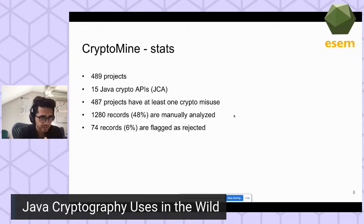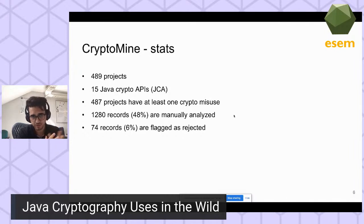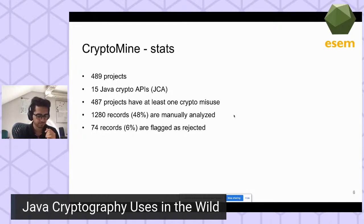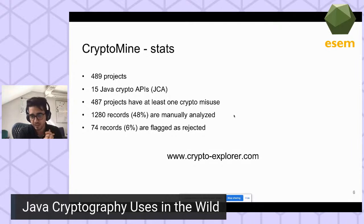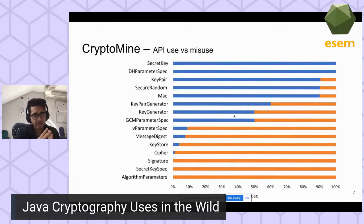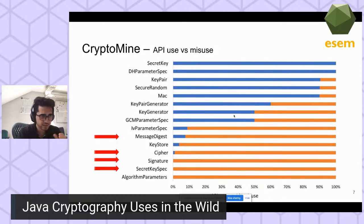In CryptoMine, there are 489 projects; 15 Java Cryptography Architecture (JCA) APIs were used; 487 projects have at least one crypto misuse; and 1,280 records — 48% of CryptoMine — were manually analyzed. Those interested can interactively explore crypto uses at crypto-explorer.com. More than half of the APIs were misused, and those with many arguments are among the most highly misused, while those with fewer arguments tend to be more secure.